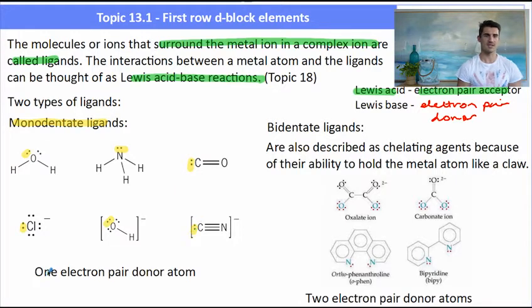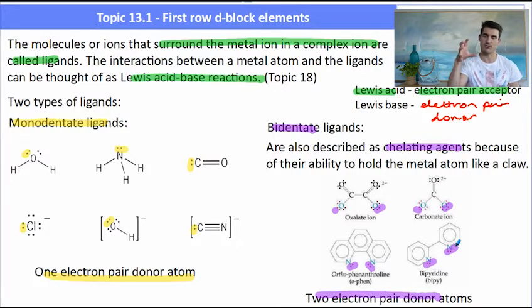We have these things called monodentate ligands which can donate one pair of electrons. We also have these ligands which are called bidentate which can donate two pairs of electrons. Those are sometimes called chelating agents because they grab the metal ion kind of like a claw.